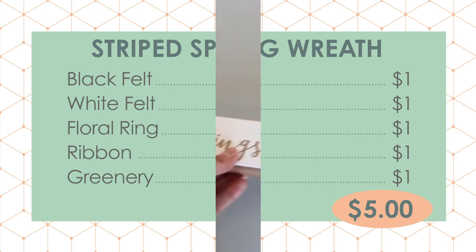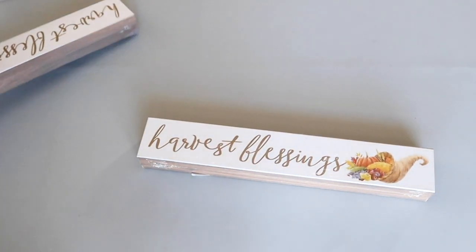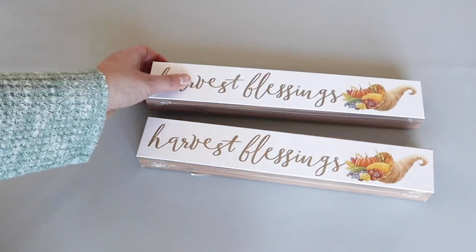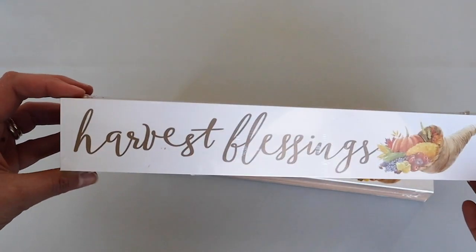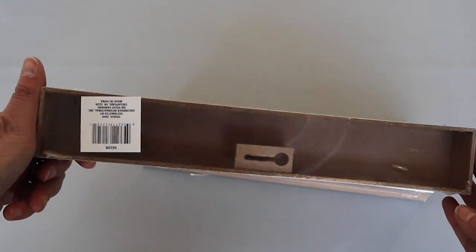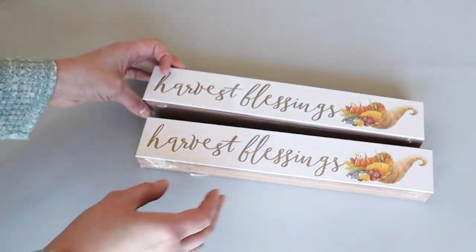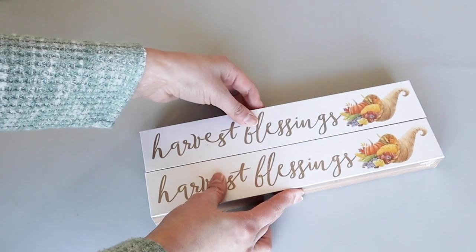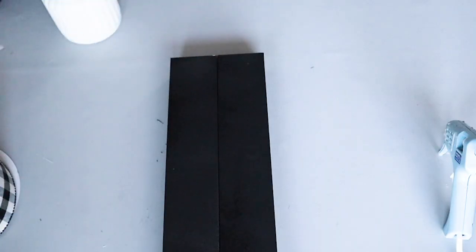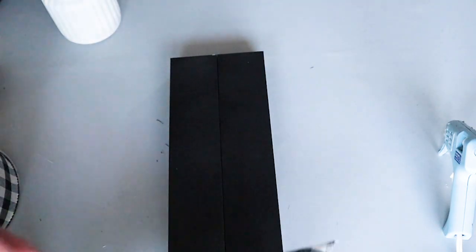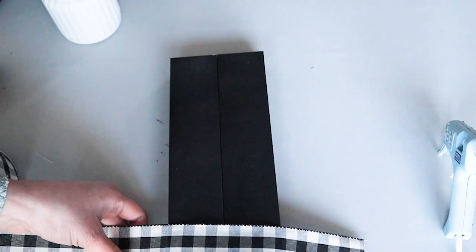I had picked up these two harvest blessing signs from dollar tree around thanksgiving time but they do usually have these shapes of signs for every season so you may be able to find them at your dollar tree. They just may look a little different. I spray painted those with a flat black paint and then used a bit of e6000 to glue them together. I added some of that buffalo check ribbon to the bottom.